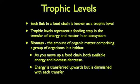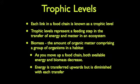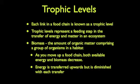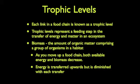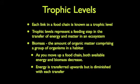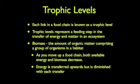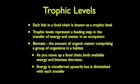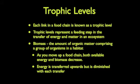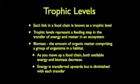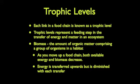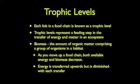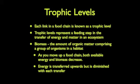Now on to trophic levels. Each link in the food chain is known as a trophic level — each time you move up a step, you're moving up a level. These represent a feeding step in the transfer of energy and matter in the ecosystem. Your biomass is the amount of organic matter comprising a group of organisms in a habitat. As you move up the food chain, both available energy and biomass decrease. Energy is transferred upwards but is diminished with each transfer. All energy is measured in joules. 90% of the energy is lost going to the next level, and only 10% of the energy is available to the next trophic level.